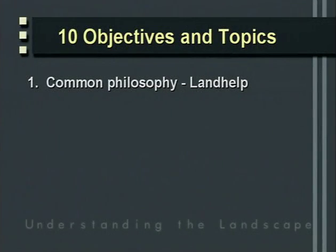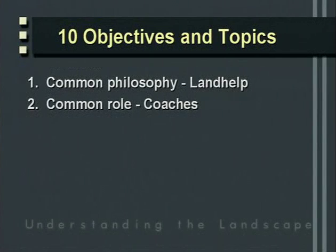What I'd like to do is give you 10 different thought processes we should all go through when working with people to affect the environment. Number one, we need a common philosophy — I'm going to call it 'land help' — a way we can think about what we do in our programs and how that relates to the land and landholders. Secondly, I'd like to talk about our role as coaches, helping landowners with the coaching they need to do their jobs better.